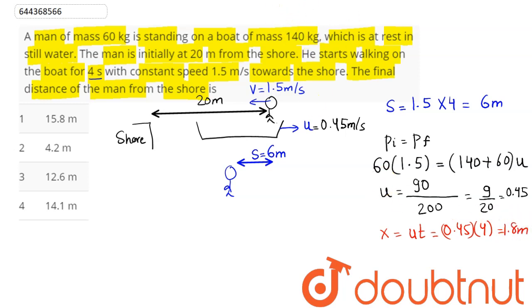The total distance now of the man from this shore here will be this distance Y, which we need to calculate. So this distance Y here can be written as the initial distance 20 minus the distance covered by this man, which is 6, plus here the distance covered by the boat, which here is 1.8. So this on calculation comes out to be 15.8 meters, which here is option number 1. Hence we can say what is the correct answer, so what is our answer.